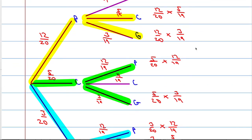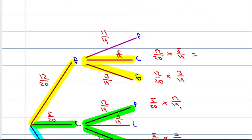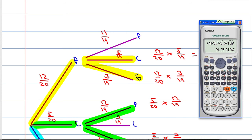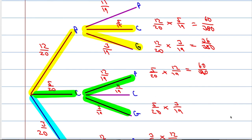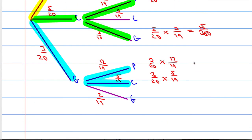Then we add up all these probabilities. Since 19 × 20 = 380, all fractions share a denominator of 380. Multiplying the numerators gives: 60/380, 36/380, 60/380, 15/380, 36/380, and 15/380.